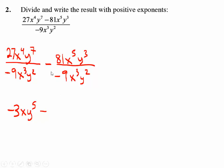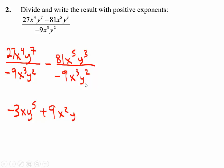The minus sign comes down, but then you've got a negative on the bottom. The easiest way is to just combine them and put a little plus — subtracting a negative is the same thing as addition. 9 goes into 81 nine times. x to the 5th divided by x cubed gives x squared. And y to the 3rd divided by y squared — subtracting the exponents, 3 minus 2 is 1.